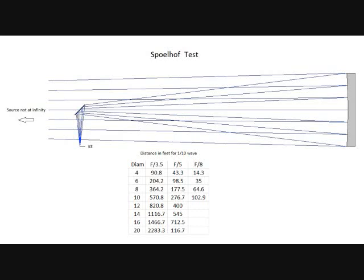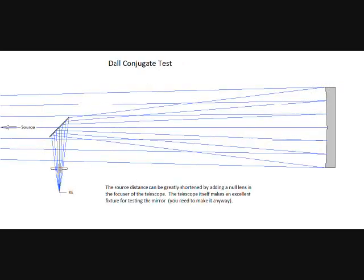And you can see in the graph here that if you're making a 4 inch F8 mirror, you only have to place it 14 feet away for it to be one tenth wave. But on the other hand, if you're making a big fast mirror like a 20 inch F3.5, you're going to be needing to place the light source about a half a mile away. This is because we're actually testing for an ellipse and not a parabola.